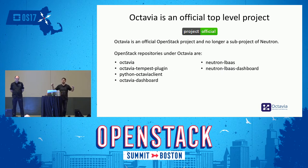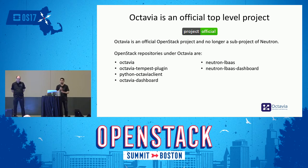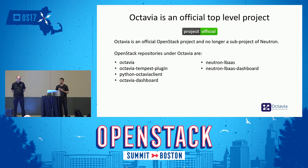We are an official top-level project, now at the same level as Neutron. We have a number of repositories: our main repository Octavia, the Octavia Tempest plugin for testing, Python Octavia Client — which just made its first release a week or two ago — and we're working hard so that by the end of the Pike cycle we should have a fully functional client. We've also got Octavia Dashboard, which is almost a direct port of the Neutron LBAS dashboard. And of course, Neutron LBAS, which is deprecated but we're still supporting until Octavia can completely replace it.